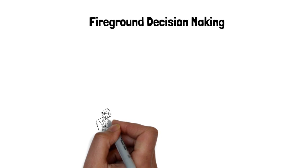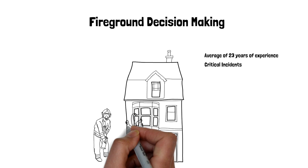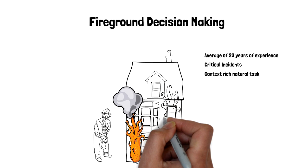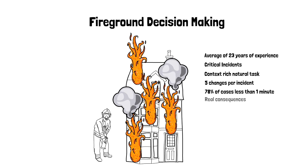The prime group that we studied was, we did our initial investigations with firefighters, and my team studied expert firefighters. They had about 23 years of experience on average. We studied 26 of them. We studied not their easy decisions, but their tough ones, the critical ones, the ones that were really challenging. These were context-rich situations, and they were dynamic. They kept changing, an average of about five changes through an incident, plus lots of time pressure. Seventy-eight percent of the cases, they made their decisions in less than a minute, and the consequences were real.